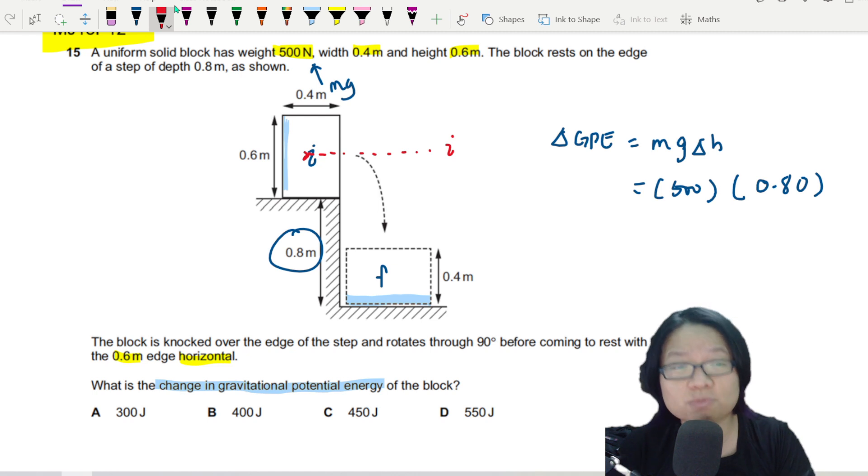And the final position is here. So actually this is my change in height - this entire height. This is your delta h, so this is wrong, not 0.8.